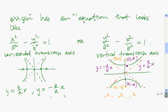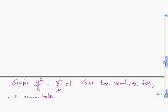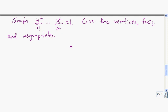So we know that the vertices are going to lie on the y-axis. We take the y squared term and look below it, which is 9. The square root of that number gives us the vertices. The square root of 9 is 3, so 0, 3 is one vertex.